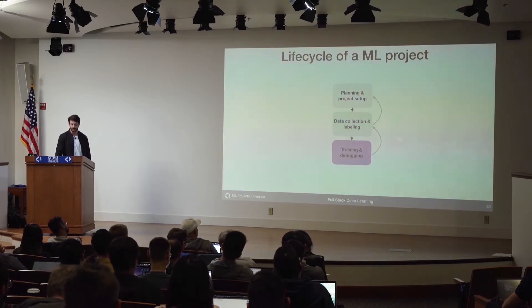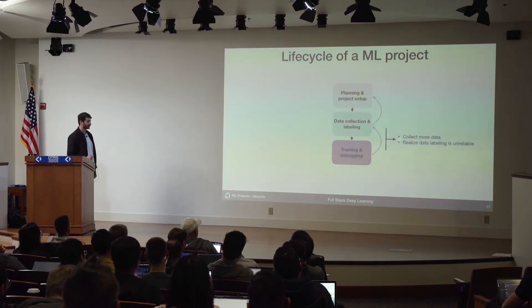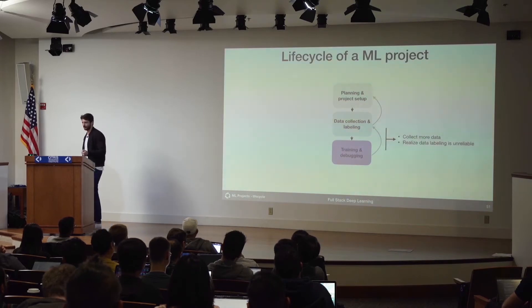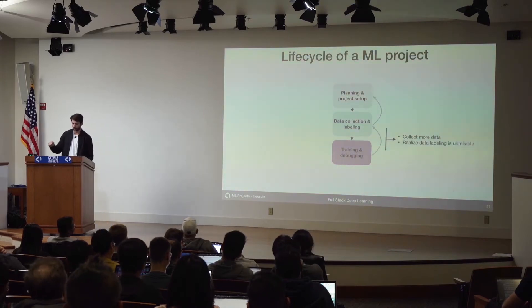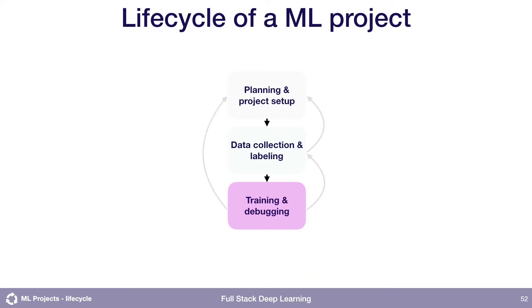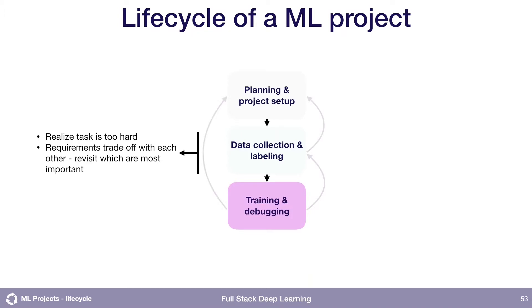There are a lot of reasons we could loop back into data collection. A lot of times we'll realize that we're overfitting. In order to meet our requirements, we need to hit a certain performance level, and it might be the case that to hit that performance we need a big model — and that big model tends to overfit if we have a small dataset. So we might need to go back and collect more data. Or we might realize that our labeling was unreliable, and it's causing our model to produce garbage results.